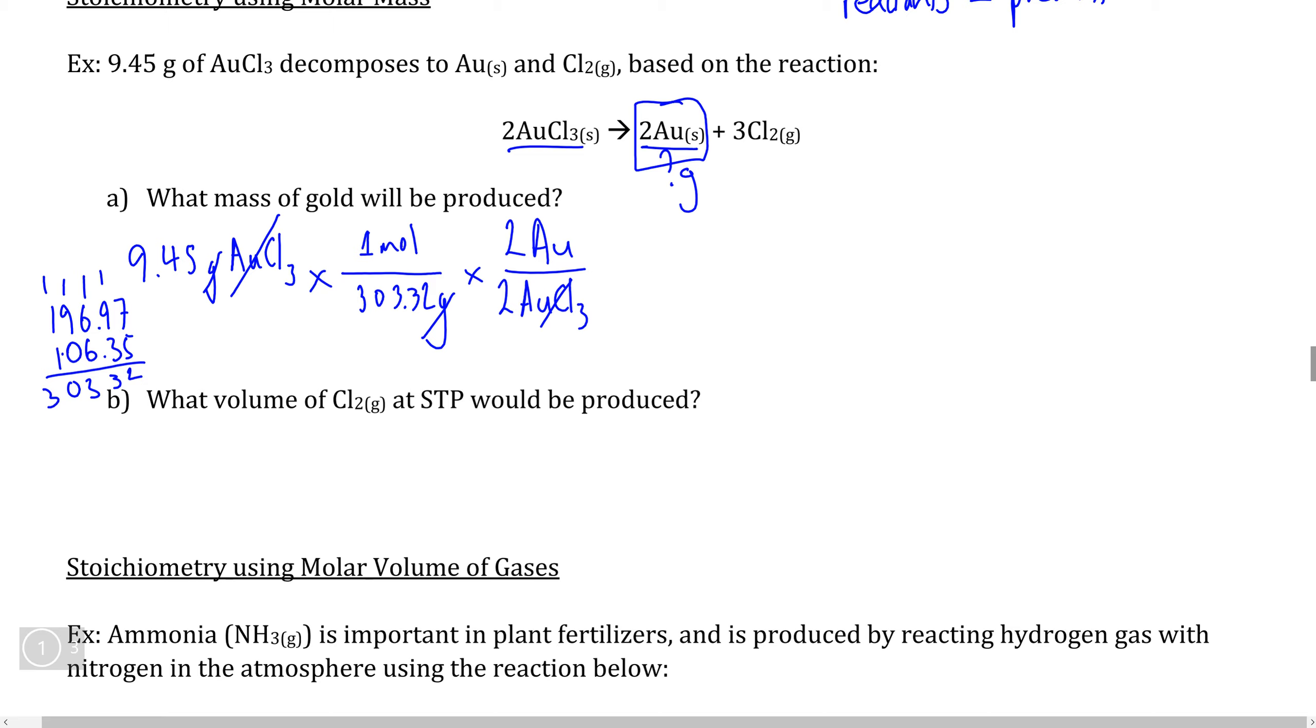So now that we have moles of gold, how do we calculate what the mass of this many moles is? Well, we know the molar mass of gold right here, so all we would need to do is multiply this by the molar mass of gold, 196.97 grams per one mole. We see that moles cancel itself out, and that leaves us with the mass of gold that we produce.